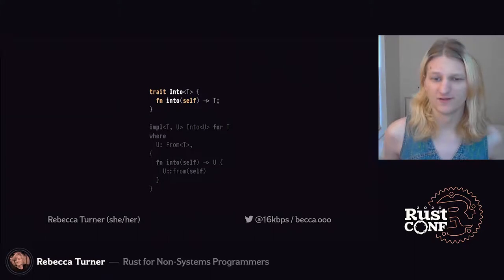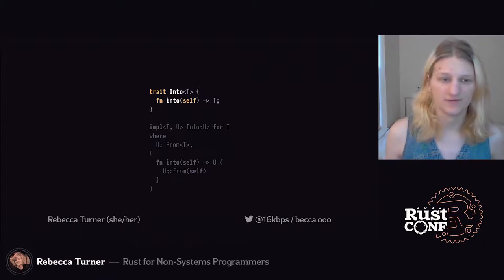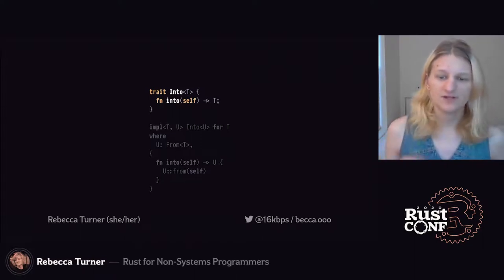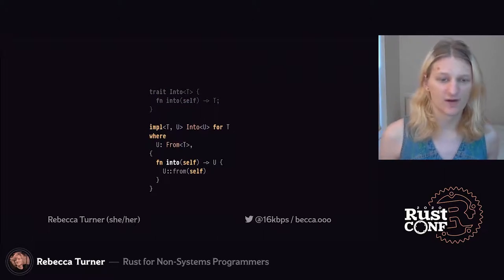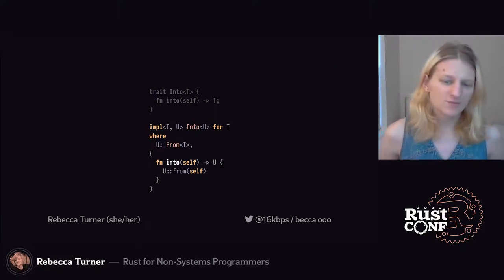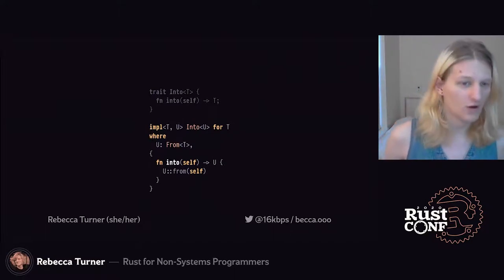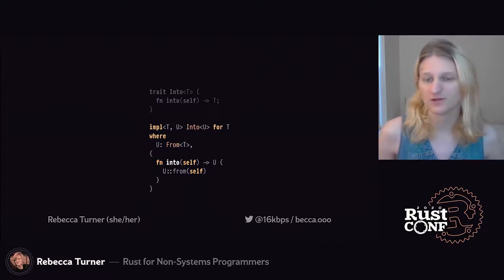Rust lets us do a lot of funky things with traits, particularly traits with generic types. Here's the `Into` trait, which is `From` in the other direction. We can implement `Into<U>` for all types `T` as long as `U` implements `From<T>`. We only have to implement one of `Into` or `From`, and we get the other trait for free.